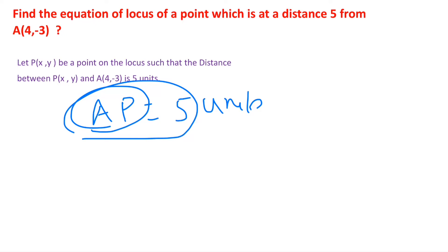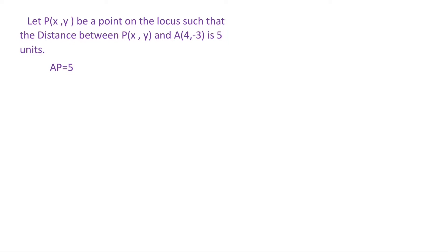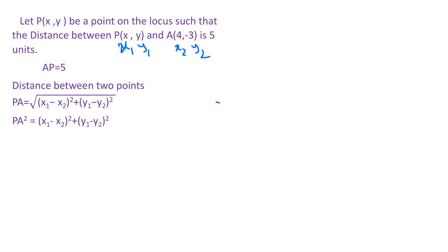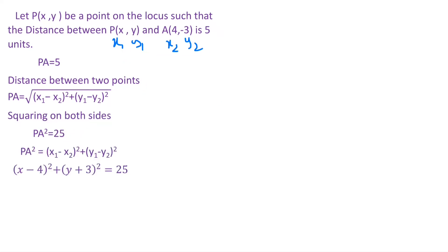Here let us consider P as (x1, y1) and A as (x2, y2) and substitute in the formula. Before that we will square both sides so that the root is eliminated. So PA² = (x1 - x2)² + (y1 - y2)². Now substituting these values in PA²: in place of x1 we write x, x2 is 4, so (x - 4)².